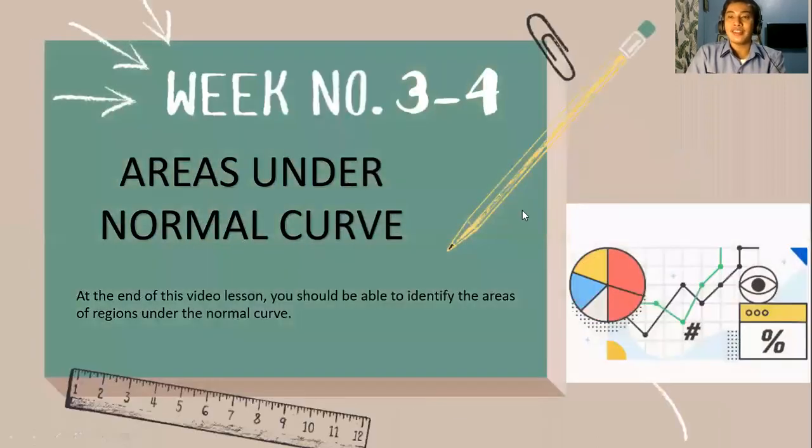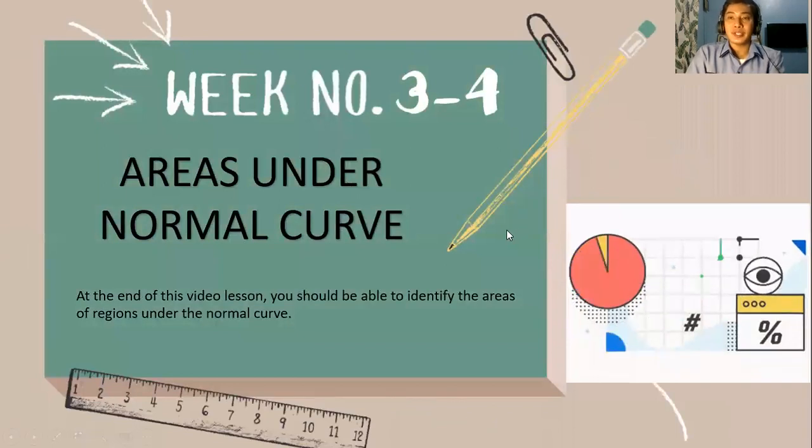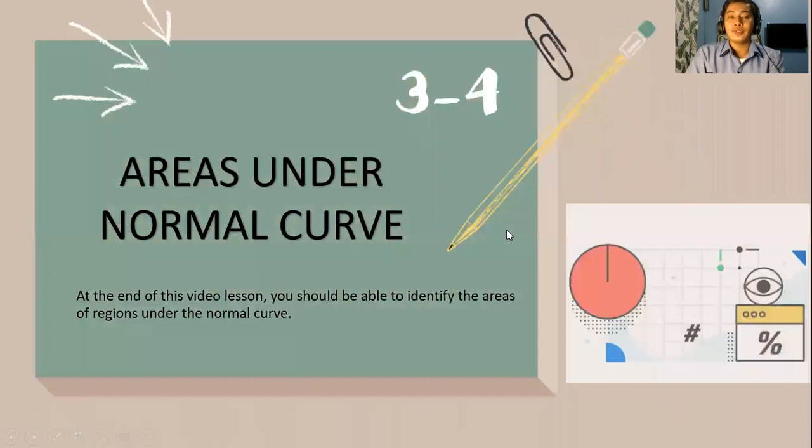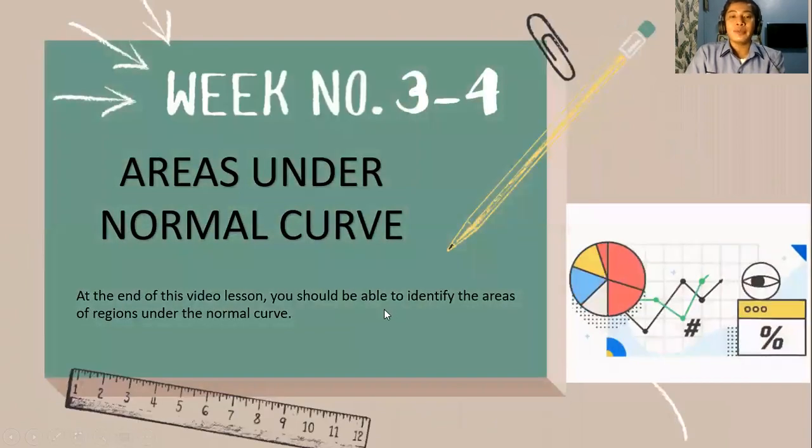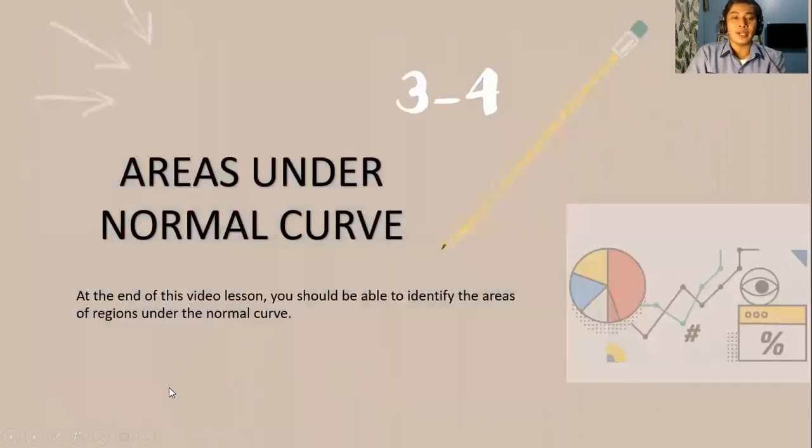We have the areas under the normal curve. So last time we discussed the properties of the normal distribution. This time we will be able to identify the areas of regions under the normal curve.